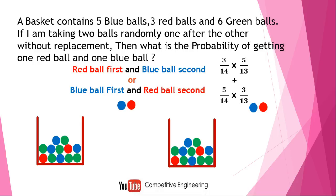Then OR means plus. For the second case — blue ball first — there are 14 balls total and 5 are blue, so 5/14. Then AND means multiply by the probability of getting a red ball second: 3 red balls remain and there are 13 balls total, giving 3/13. So the full calculation is (3/14 × 5/13) + (5/14 × 3/13) = 15/182 + 15/182 = 30/182, which reduces to 15/91.